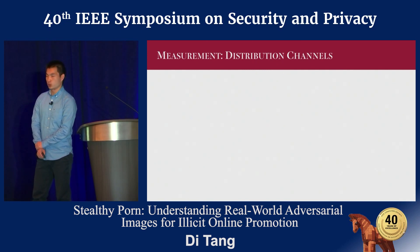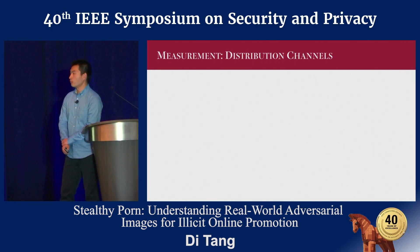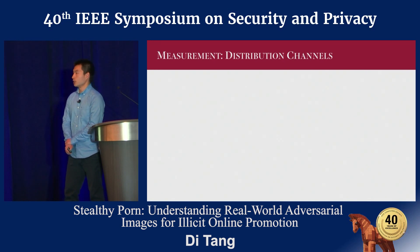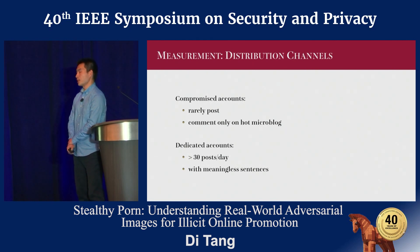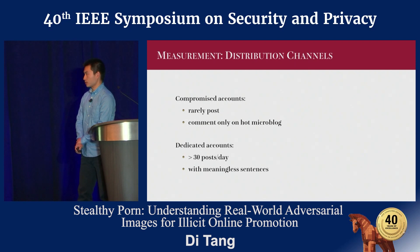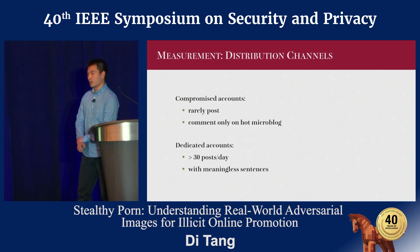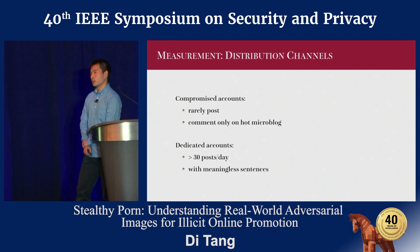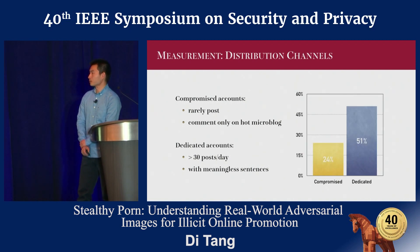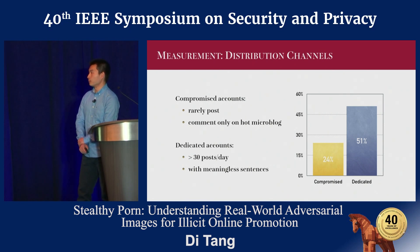Next, we study the distribution channels. We measured the accounts controlled by these campaigns, and these accounts can be divided into two types: compromised accounts and dedicated accounts. Compromised accounts post EPIs only occasionally and may have been taken over by adversaries. Dedicated accounts are very aggressive — they post more than 30 EPIs per day, even though the actual text in those posts is minimal. We suspect these accounts are maintained by bots. We found that campaigns control more dedicated accounts than compromised accounts, and more than half of all accounts are dedicated.